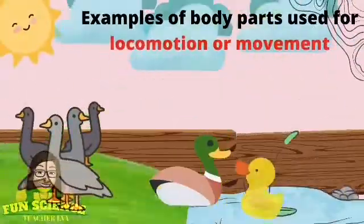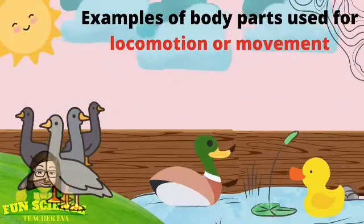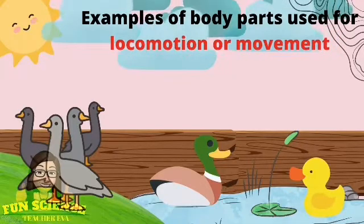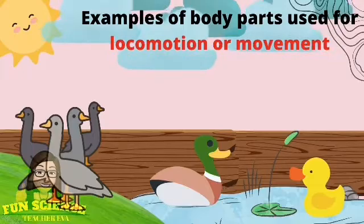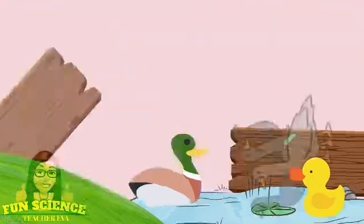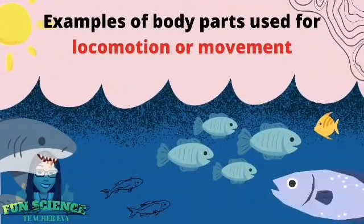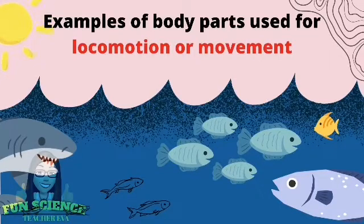Ducks and geese have webbed feet. They can walk and run, and their webbed feet allow them to swim in ponds and lakes. Fish have fins and a tail for swimming. They use them to push the water backward so that they can move forward.